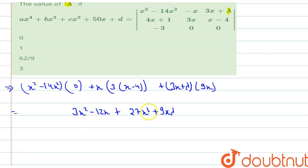Now let's solve it further. This is 27x square and this is 3. So this is 30x square plus x. Let's take common x. So this will be 9 lambda minus 12.